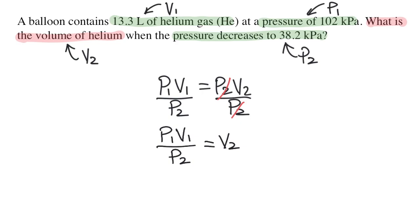Now I can just plug in all the variables that I labeled in the question. P1 is 102 kilopascals. V1 is 13.3 liters. And P2 is 38.2 kilopascals.